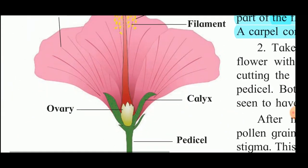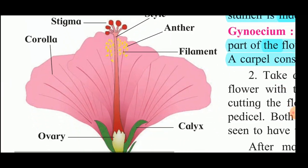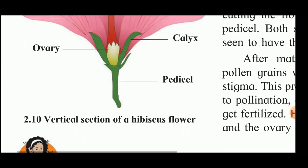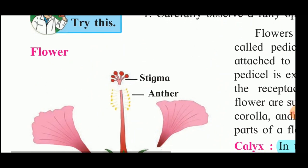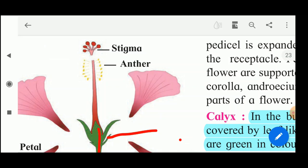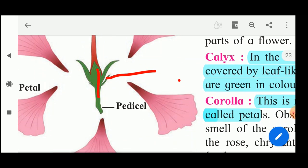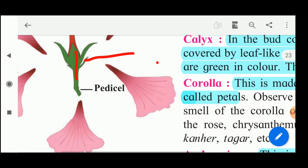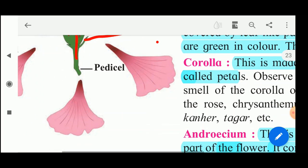Then the last part of this flower is the gynoecium. Gynoecium is the female reproductive part of the flower. It is made up of carpels. The carpels consist of stigma, style, and ovary. On the top you can see the stigma, then a long tube-like structure, and then inside this green part the ovary is there.